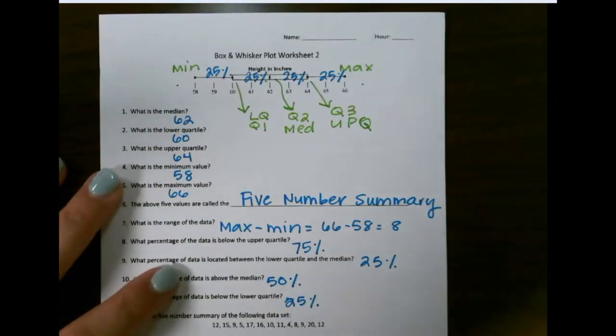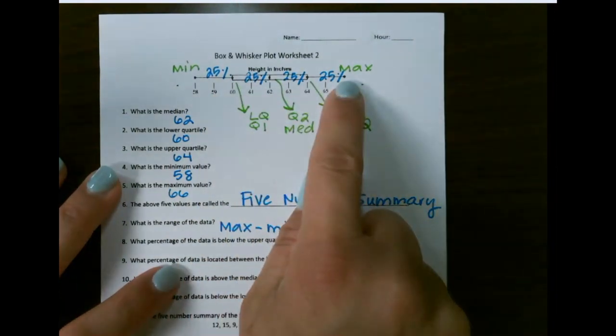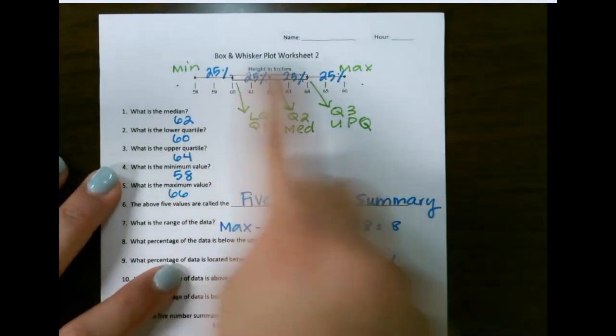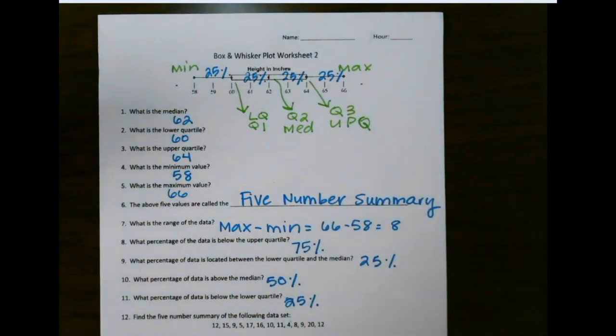The most important thing to remember is what each point represents on your box and whisker plot, and that each quartile is 25%, and that should make interpreting box and whisker plots pretty simple.